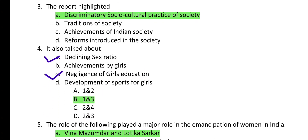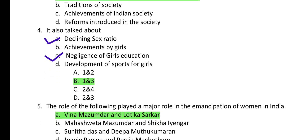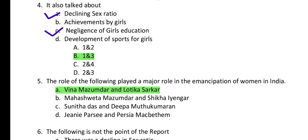Question 4: The report also talked about declining sex ratio, achievement by girls, negligence of girls' education, and development of sports for girls. It talked about A — declining sex ratio — and C — negligence of girls' education. So option B, 1 and 3, is correct.